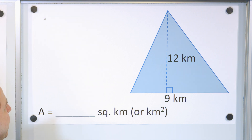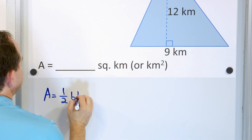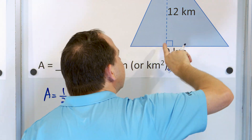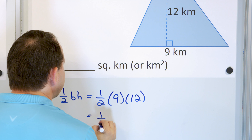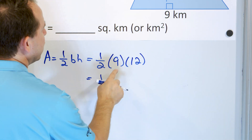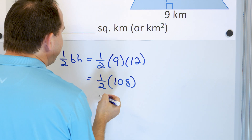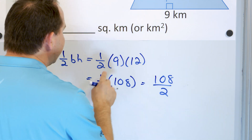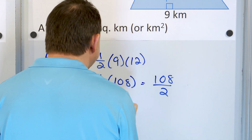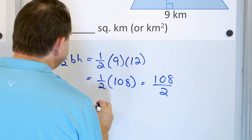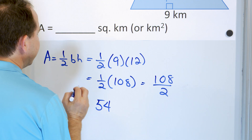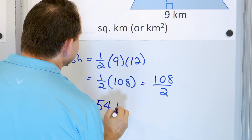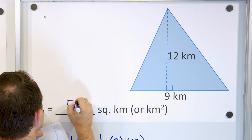Here's our last triangle — a 9-kilometer base and a 12-kilometer height. The area is one-half times the base times the height. One-half times 9 times 12. Nine times 12 equals 108, so we have 108 divided by 2. When you do the long division, or verify that 2 times 54 equals 108, the answer is 54. The area is 54 square kilometers.